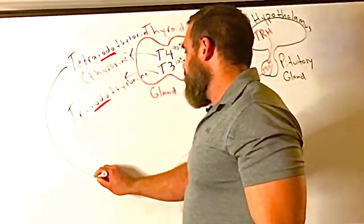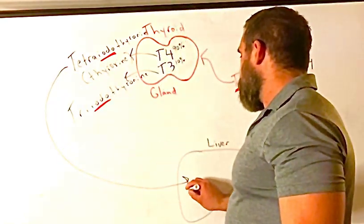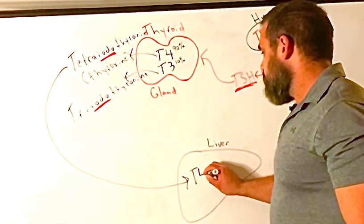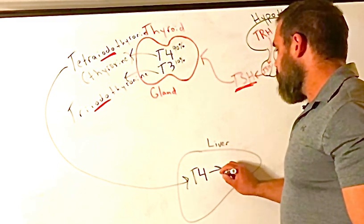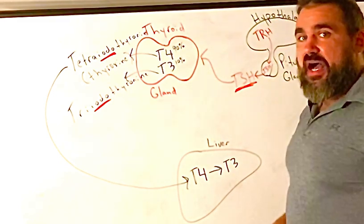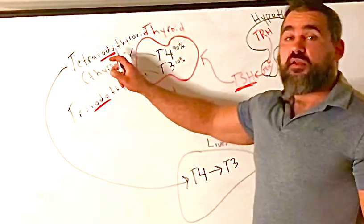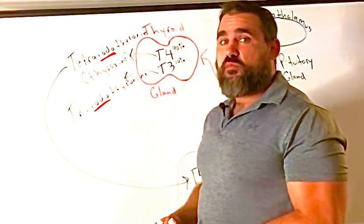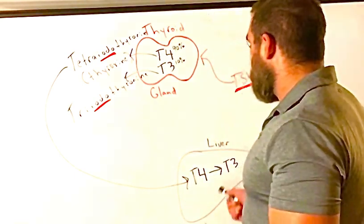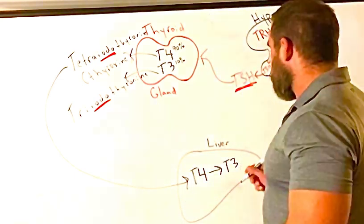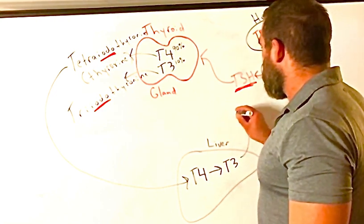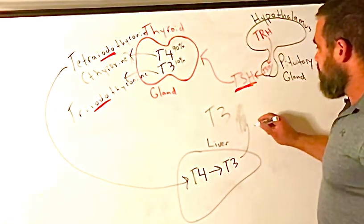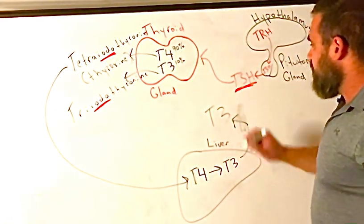For T4 to become active, it has to go all the way to the liver. And then T4 has to get converted to T3, and there's enzymes called deiodinases. Tetra—four iodines. Tri—three. What do deiodinases do? They remove an iodine. You remove an iodine and then you get T3. So T3 is our active thyroid hormone that's going to regulate our metabolism.